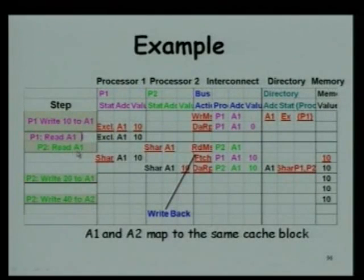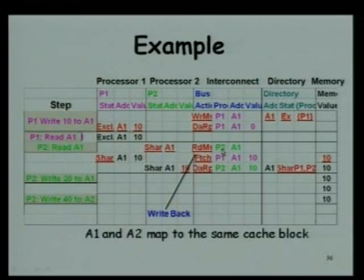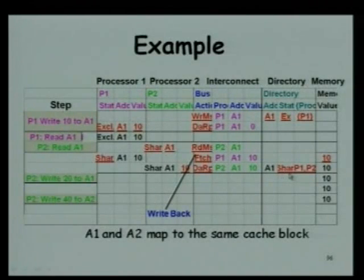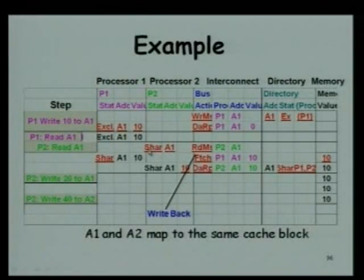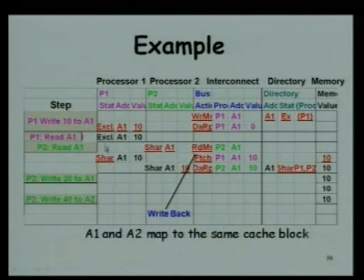If P2 wants to read A1, it will generate a read miss. The data has to be written back; P1's state changes from exclusive to shared and P2's state becomes shared. The sharer set is incremented to P1 and P2. The write-back and data forwarding are actually two separate actions — the memory controller requests the data from P1, P1 writes back updating the memory, then P2 gets the data reply with value 10.